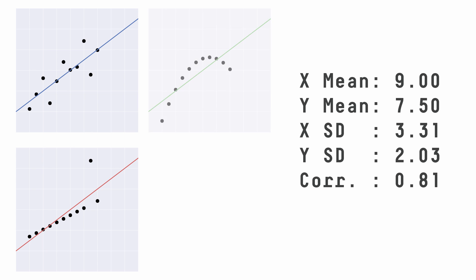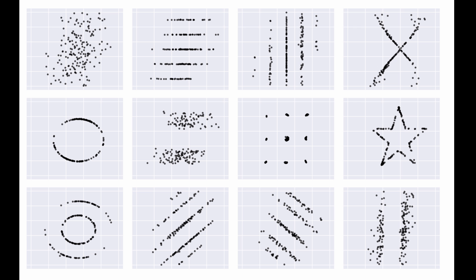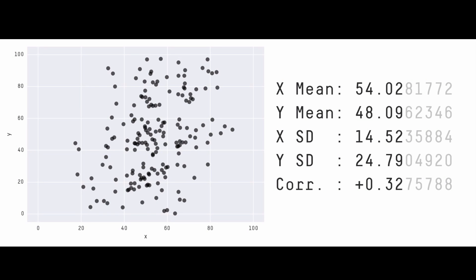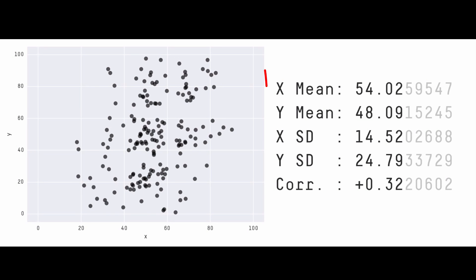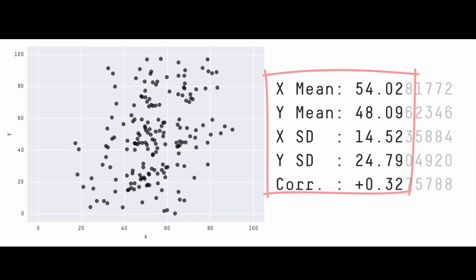Data sets which are identical over a number of statistical properties yet produce dissimilar graphs are frequently used to illustrate the importance of graphical representations when exploring data. We present a novel method for generating such data sets. The key insight behind our approach is that it is relatively easy to take an existing data set, modify it slightly, and maintain nearly the same statistical properties.